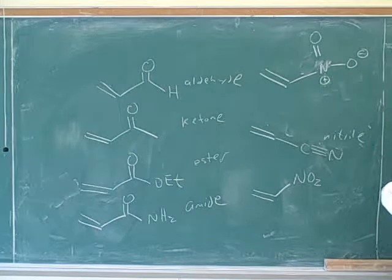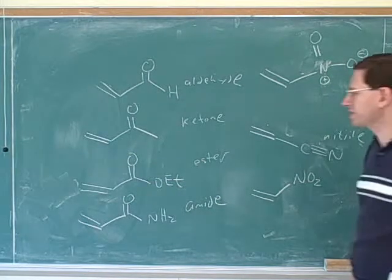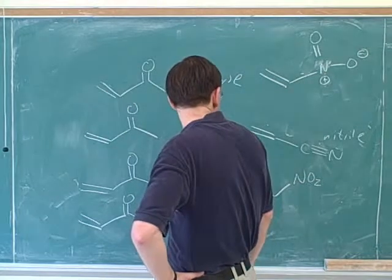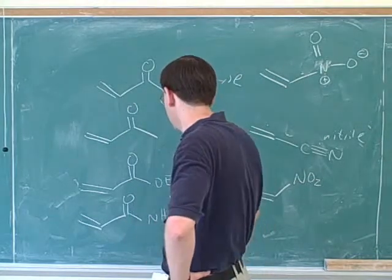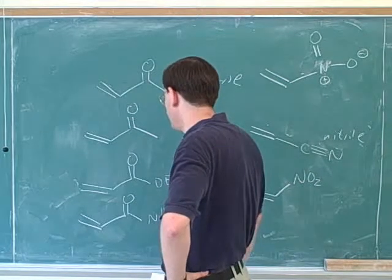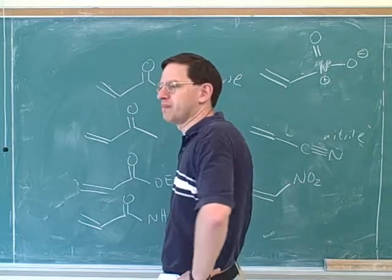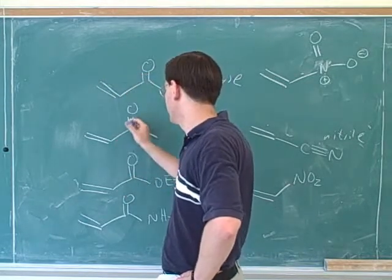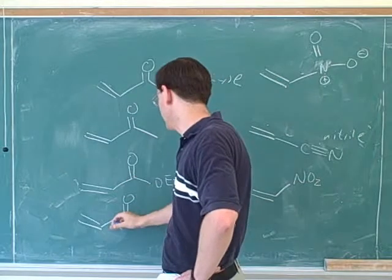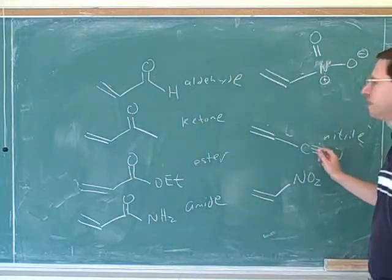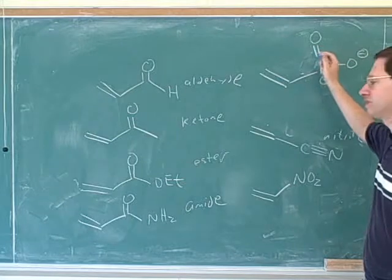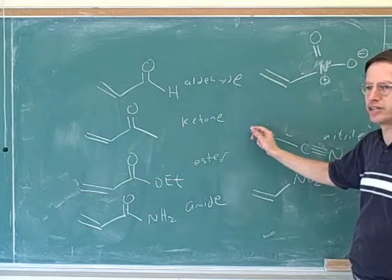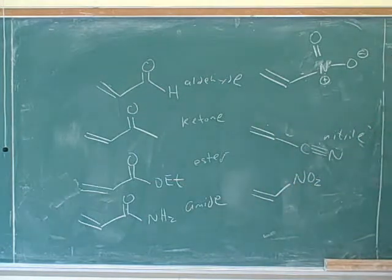Here's a whole bunch of different Michael acceptors you might have to watch out for on the exam. What do these have in common? They all have a carbon-carbon double bond adjacent to a single bond and then another pi bond — that conjugated pattern repeats across all of them. Because of those structures, they all have resonance structures where there's a positive charge on the beta carbon. So these would all be Michael acceptors.